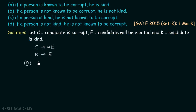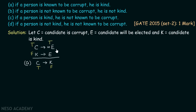Option A: if a person is known to be corrupt, then he is kind (C → K). We use the method of contradiction: try to make all premises true and the conclusion false. Let C be true and K be false — so the conclusion C → K is false. With C true, premise S1 (C → ¬E) requires ¬E to be true, so E is false. Since K is false, premise S2 (K → E) is vacuously true. Both premises are true and the conclusion is false, so this argument is invalid. Option A is wrong.